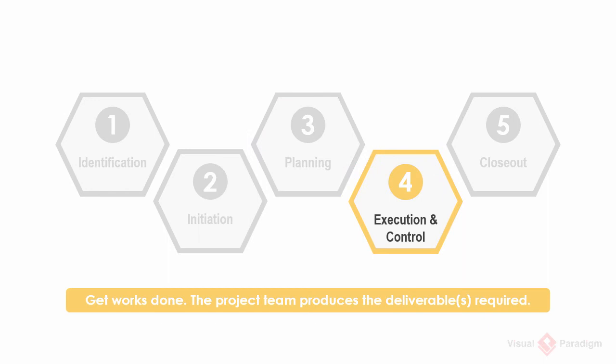In the execution and control phase, the project completes the development activities identified in the planning phase to produce the project deliverables required. This phase ends by having the deliverables accepted by the users and the project sponsor.